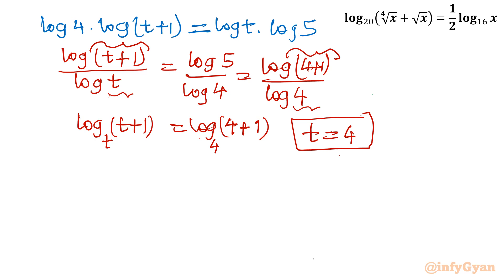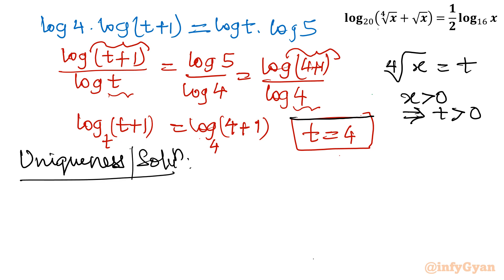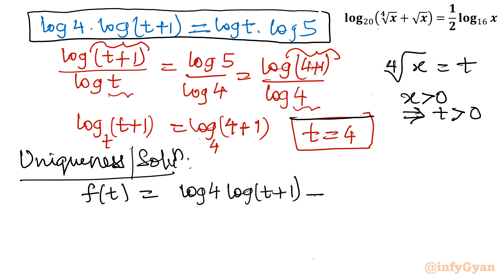We substituted ⁴√x = t, and since x is positive, t must also be positive. To verify uniqueness of the solution, let's consider f(t) = log 4 · log(t+1) − log 5 · log t, set equal to 0, and take its derivative.